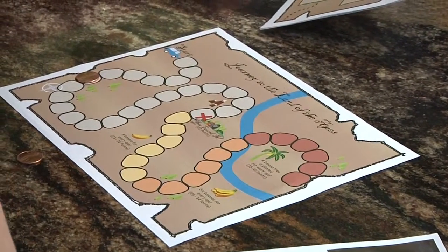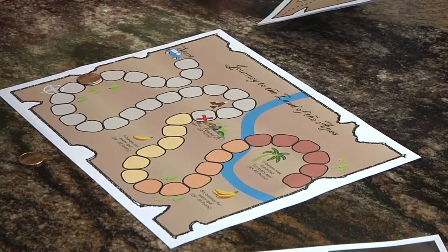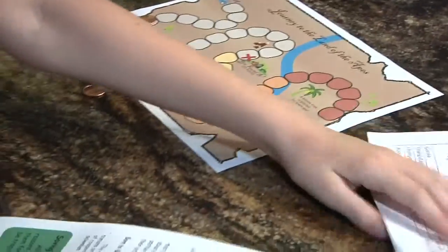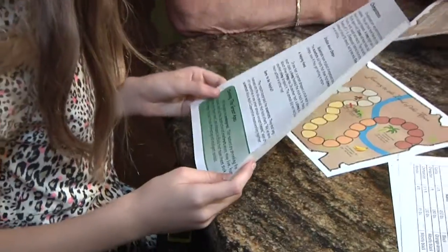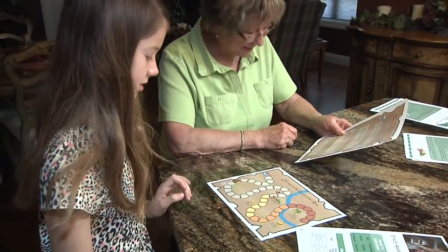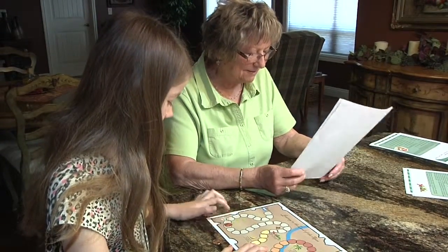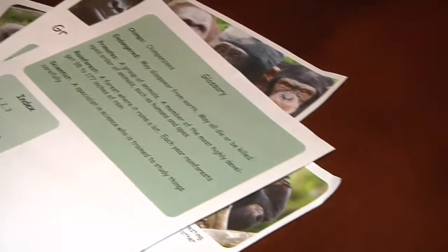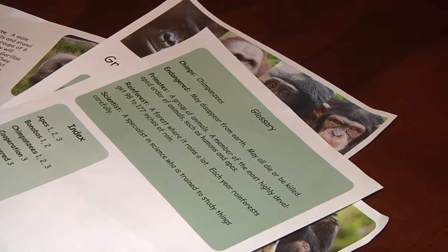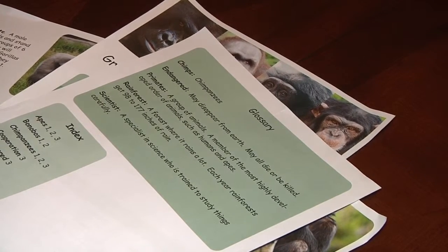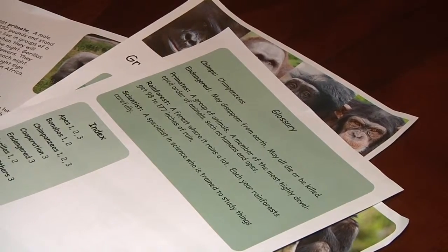Look at the heading for chimpanzees. Read the subheadings to me. Studies about chimps, a helping hand, and born to be helpful. How many points do you think you get for that? Three. Right on. So why don't you look at the glossary and tell me what a rainforest is? A forest where it rains a lot. Each year rainforests get 98 to 177 inches of rain. That's really good. That's one point.